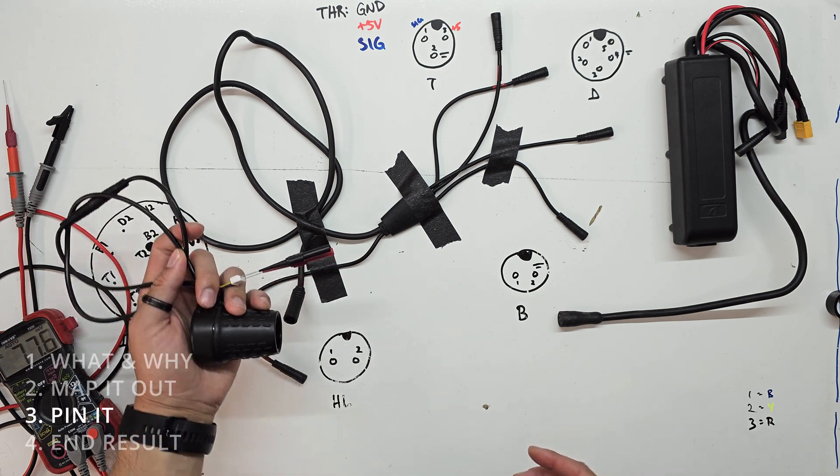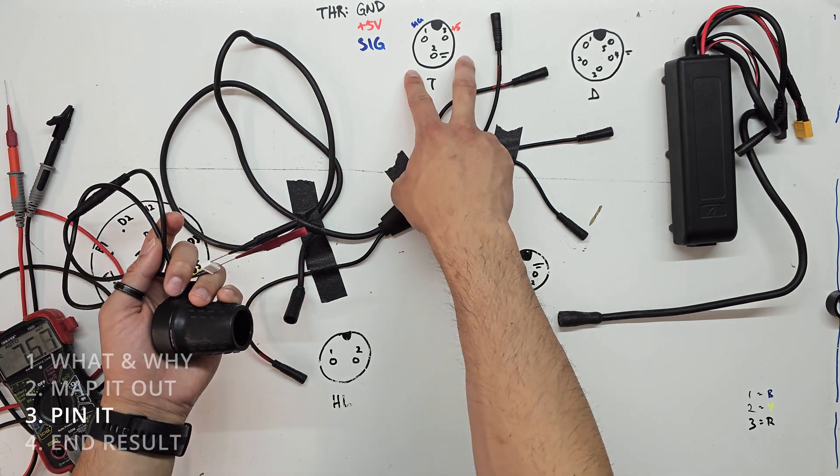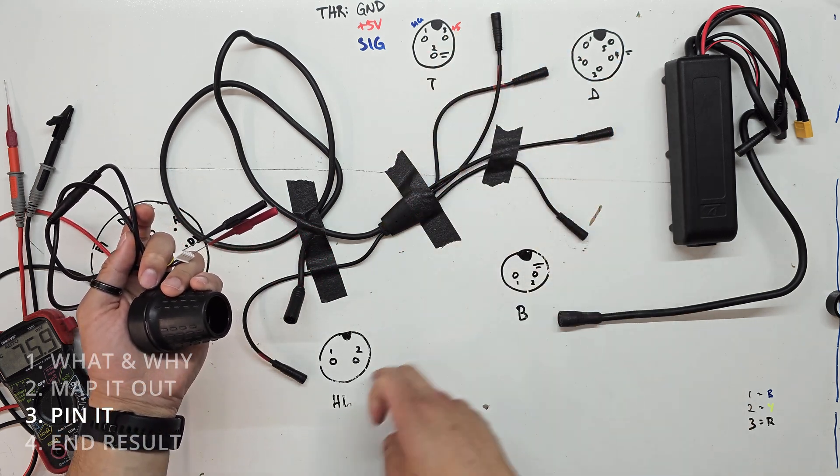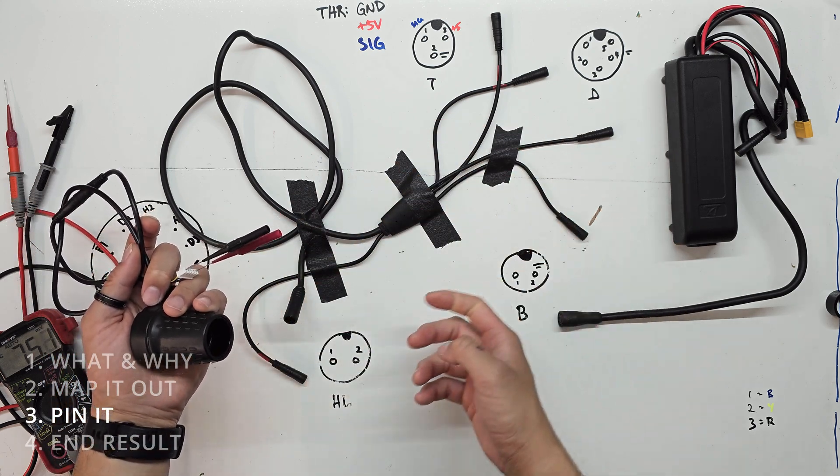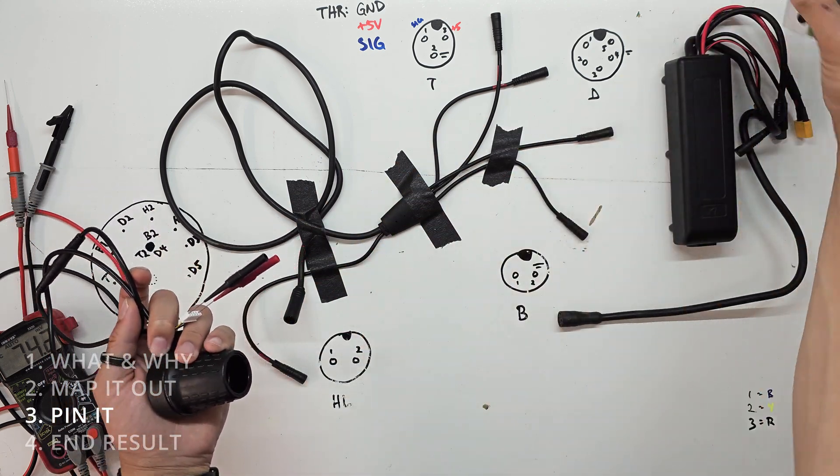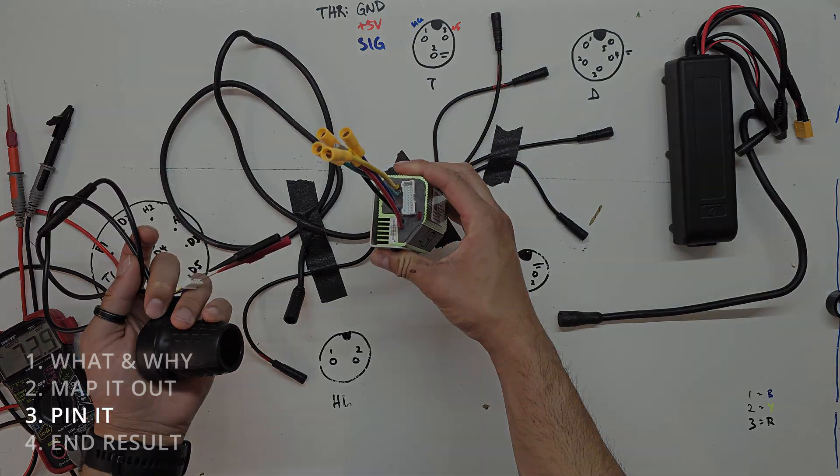So it only took us a few minutes to figure out our throttle pins. We've laid them out here. We're going to continue making the map for all of these other connectors. And then we know exactly which pin we need to send into this connector for the new controller.